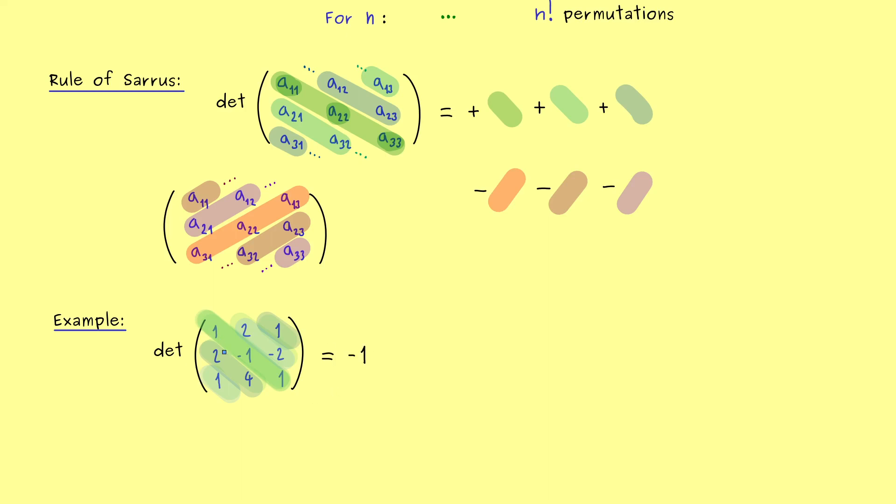So first we have 1 times minus 1 times 1 so we have minus 1. So please note we have a minus sign by the multiplication but the sign of the permutation is still plus. So in other words we don't flip the sign here. And now for the next one we have 2 times 4 times 1 which is 8. And the last one is now 1 times 2 minus 2 so minus 4.